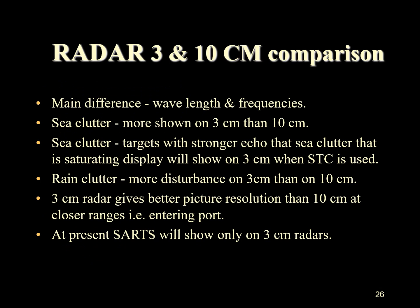The main difference between the 3 and 10 centimeter radar is the wavelength and frequency. Sea clutter is more pronounced on a 3 centimeter radar than a 10 centimeter radar — targets with strong echoes that sea clutter is saturating the display will show on 3 centimeter when a sensitivity time control is used. Rain clutter also shows more disturbance on 3 centimeter than on 10 centimeter radar. The 3 centimeter radar gives better picture resolution than 10 centimeter at close ranges, such as entering port. At present, SARTs will only show on 3 centimeter radars.